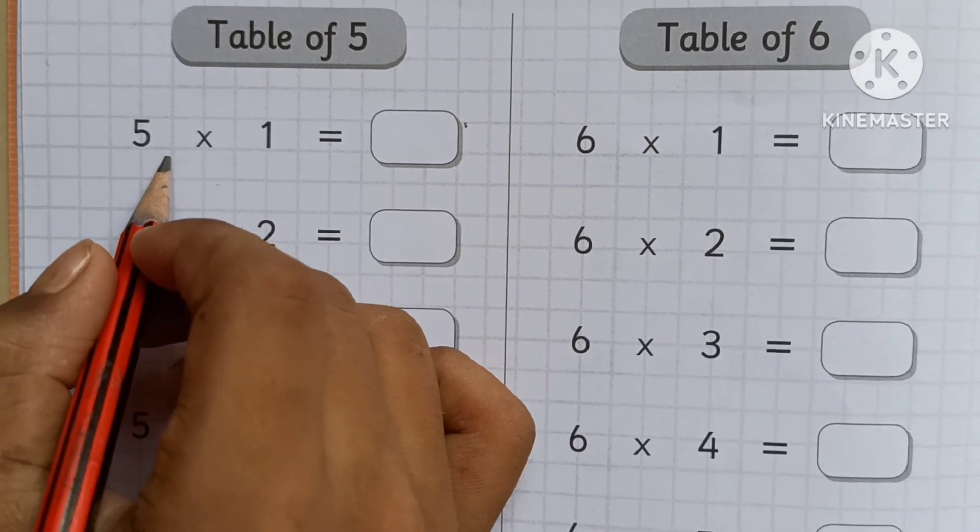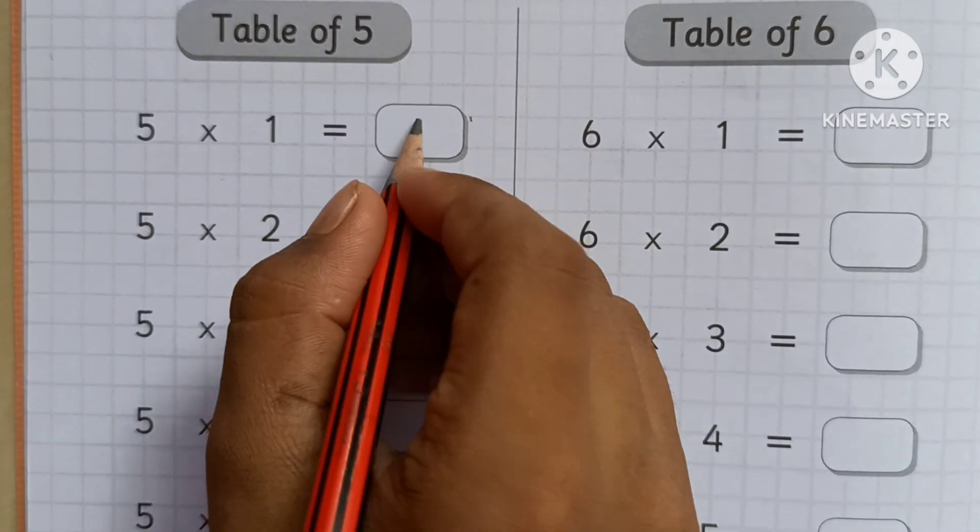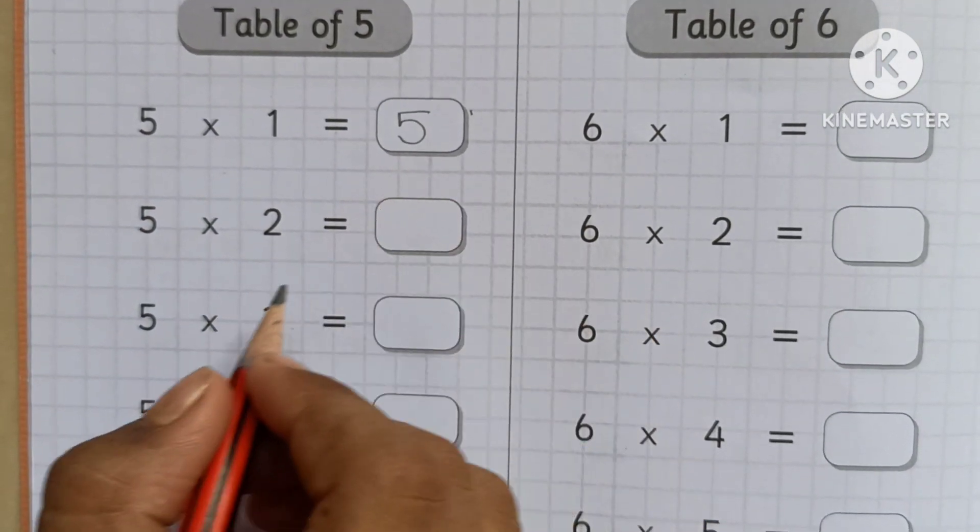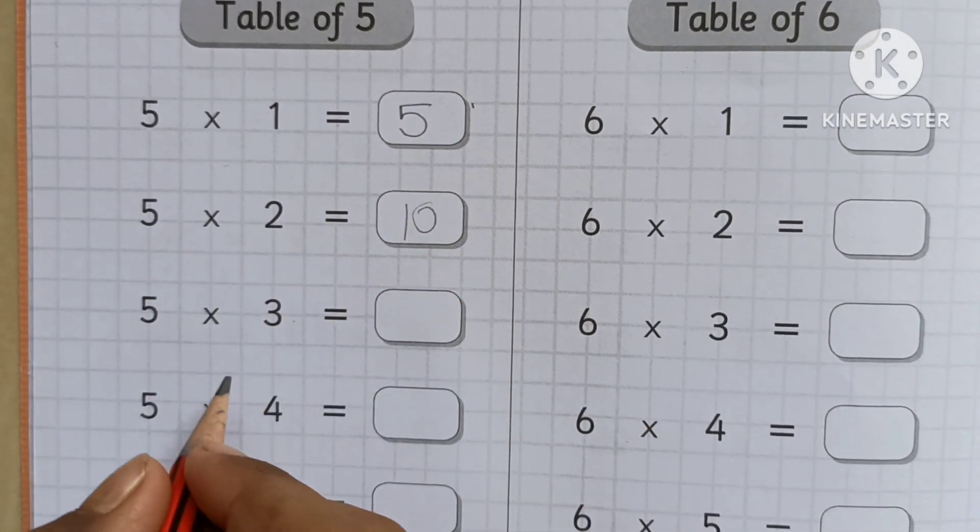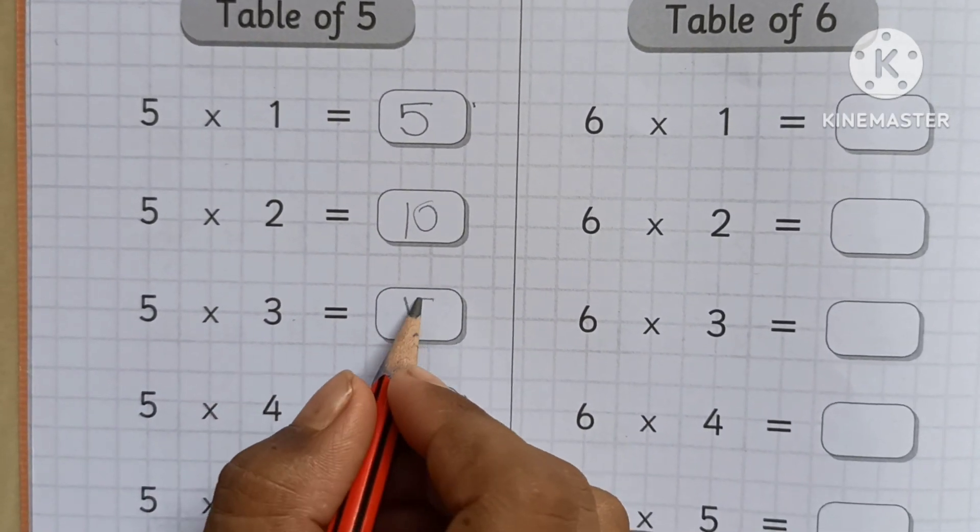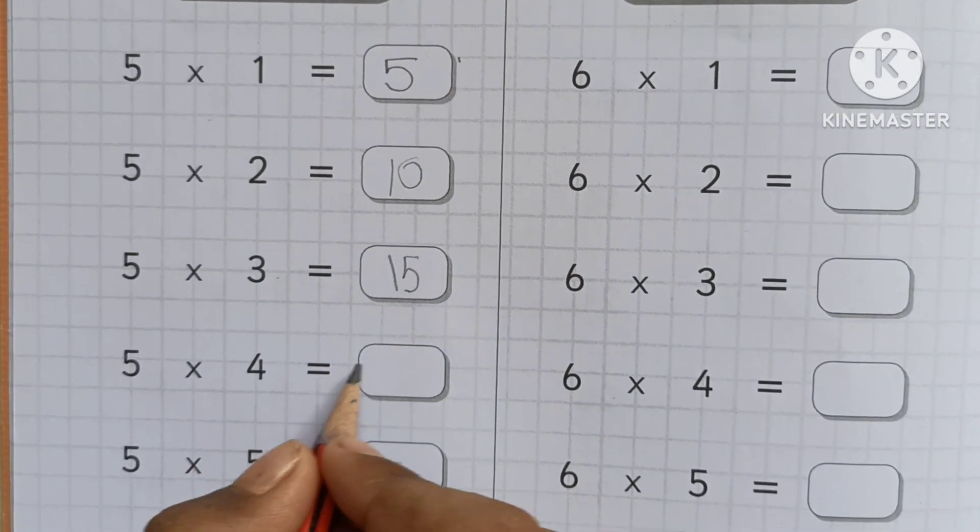Five ones are five. Five twos are ten. Five threes are fifteen. Five fours are twenty.